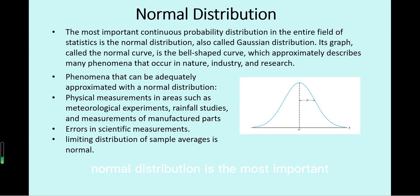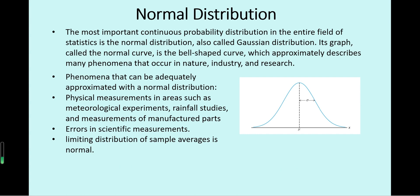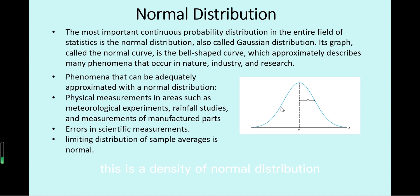Normal distribution is the most important continuous probability distribution in statistics, and it is also called Gaussian distribution. Its graph, called the normal curve, is a bell-shaped curve. This is the density of normal distribution.